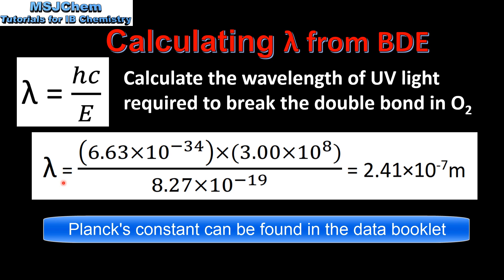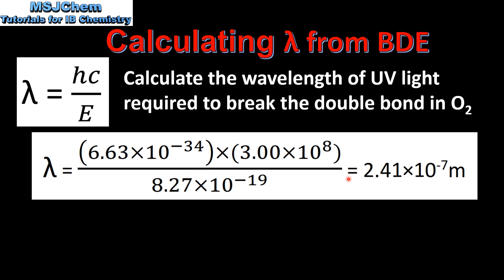Next I'll input the values into the equation. Here we have Planck's constant multiplied by the speed of light and divided by the energy required to break one double bond. That gives us a wavelength of 2.41 times 10 to the negative 7 meters.